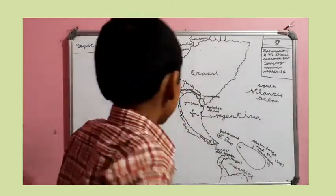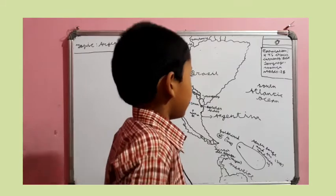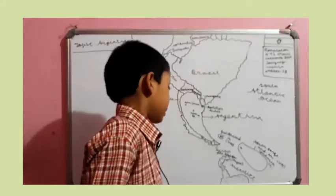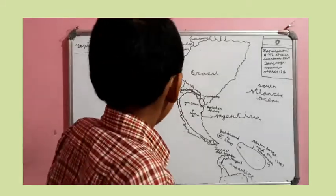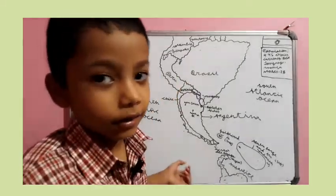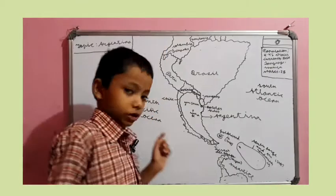Argentina borders the South Atlantic Ocean, but it borders a little bit to the South Pacific Ocean.